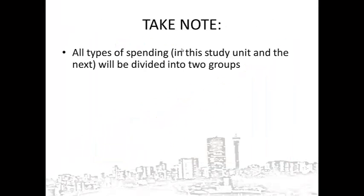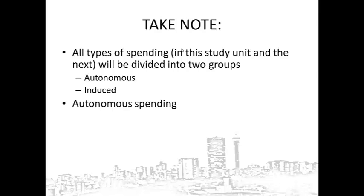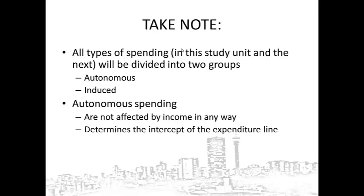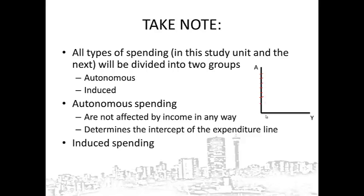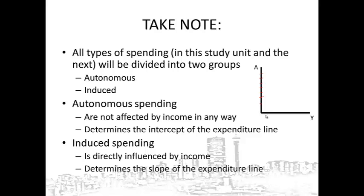All types of spending in this study unit and the next will be divided into two groups: autonomous spending and induced spending. Autonomous spending is not affected by our income in any way — it determines the intercept of the expenditure line, meaning where the expenditure line would intercept or cut through. Induced spending is directly influenced by your income and determines the slope of your expenditure line, meaning how flat this line would be.